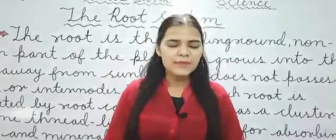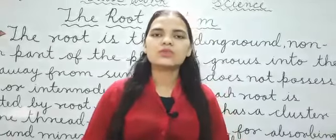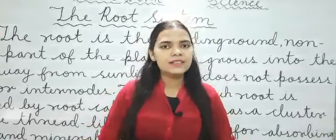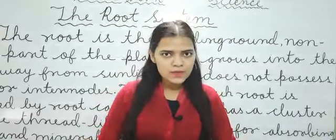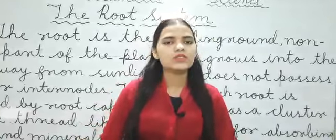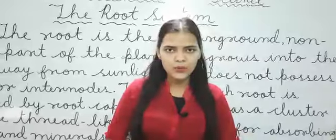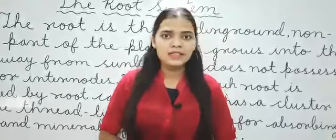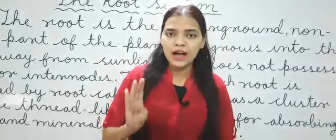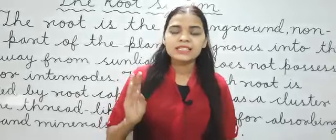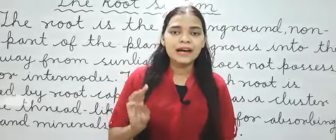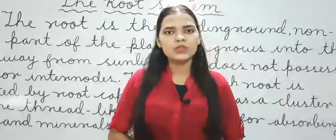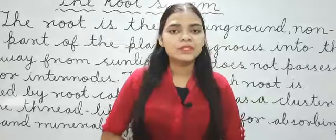First is a root system and second is a shoot system. The root system consists of roots and it grows underground. While the shoot system consists of flower, leaf, stem, branches, seed, and it grows above the ground.